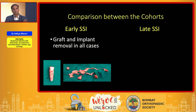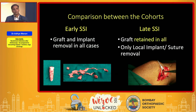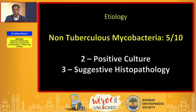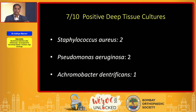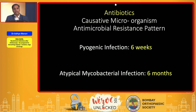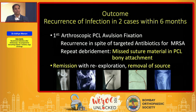The most important point was that the graft and implants had to be removed in all cases with early infection, whereas we could retain the graft and remove only the offending local source like the ethibond suture material or the metalwork in late infections. Non-tuberculous mycobacteria were the causative organism in five of these ten, and we got 70% culture positivity. Antibiotics were given for a period of six weeks to six months based on the causative microorganism. Two cases had a recurrence within six months of our debridement.